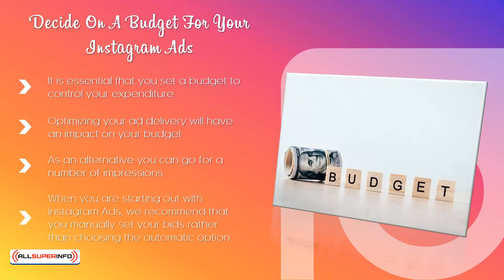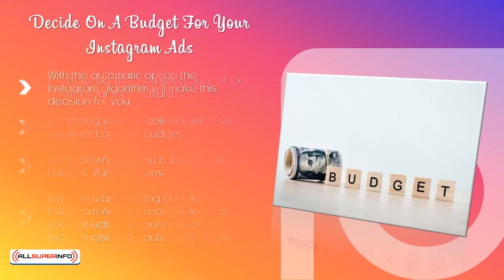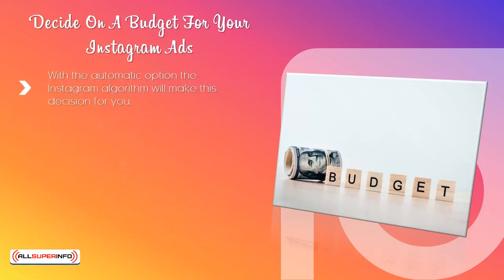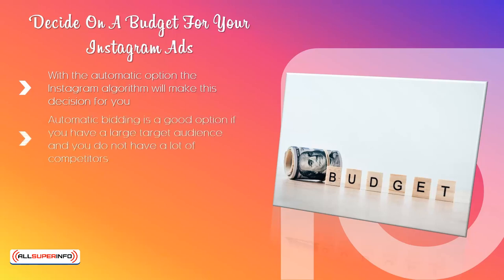When you are starting out with Instagram ads, we recommend that you manually set your bids rather than choosing the automatic option. By choosing the manual option, you are able to decide on the maximum price that you are prepared to pay for link clicks. With the automatic option, the Instagram algorithm will make this decision for you. One of the advantages of setting this manually is that you will have the option to make higher bids than your competitors to try and outdo them. Automatic bidding is a good option if you have a large target audience and you do not have a lot of competitors.